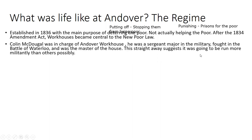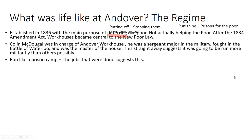The person in charge at Andover workhouse was Colin McDougall. His background was as a sergeant major in the military — he fought in the Battle of Waterloo. He was the overall master of the house and was going to run it a lot more militantly than others, possibly because of his background. He was very strict, and he and his wife ran the workhouse like a prison camp.